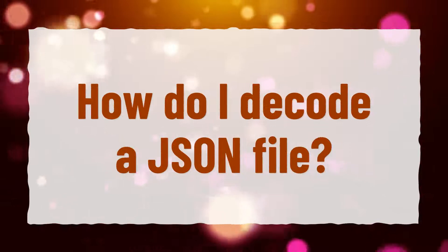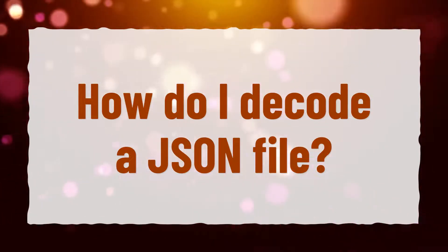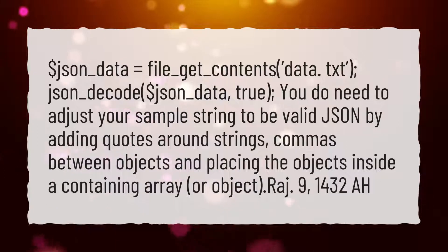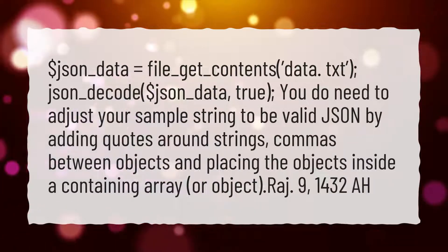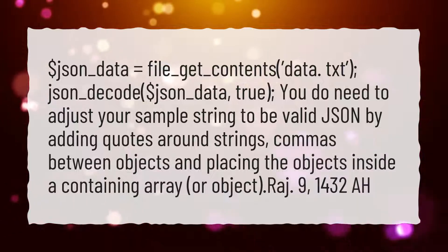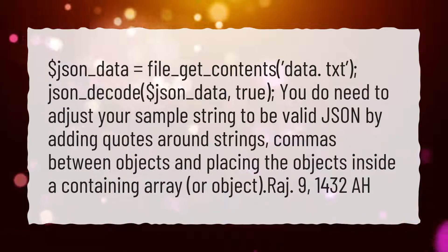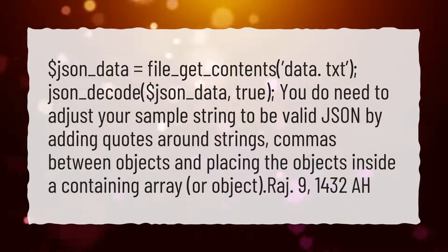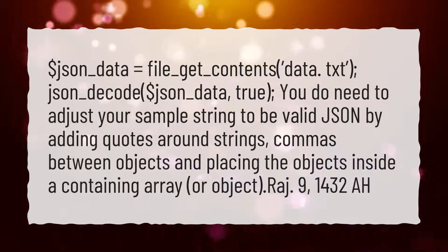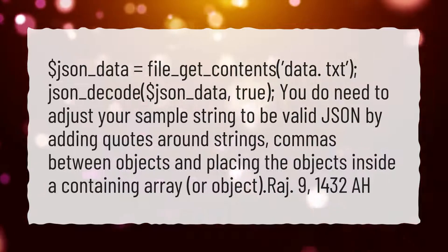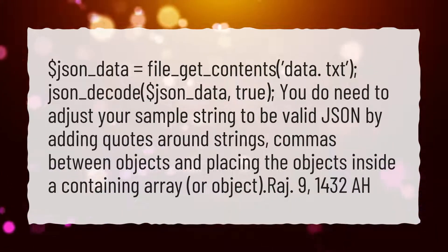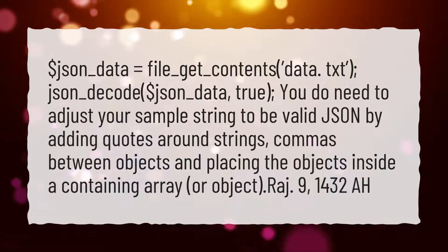How do I decode a JSON file? Use: $JSON_data = file_get_contents('data.txt'); then JSON_decode $JSON_data, true. You do need to adjust your sample string to be valid JSON by adding quotes around strings, commas between objects, and placing the objects inside a containing array.